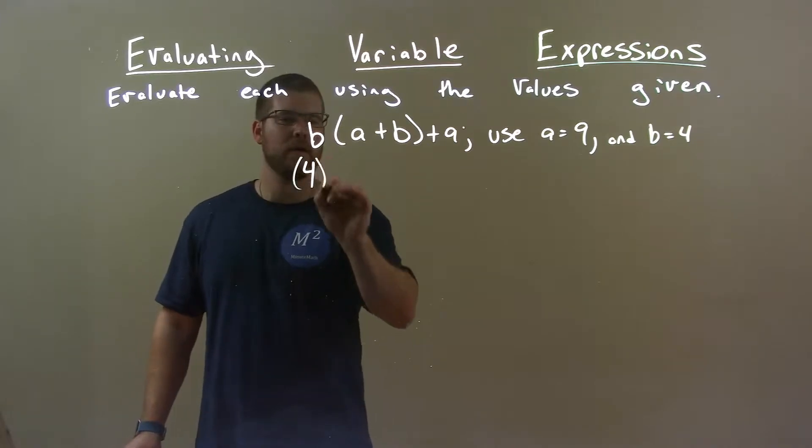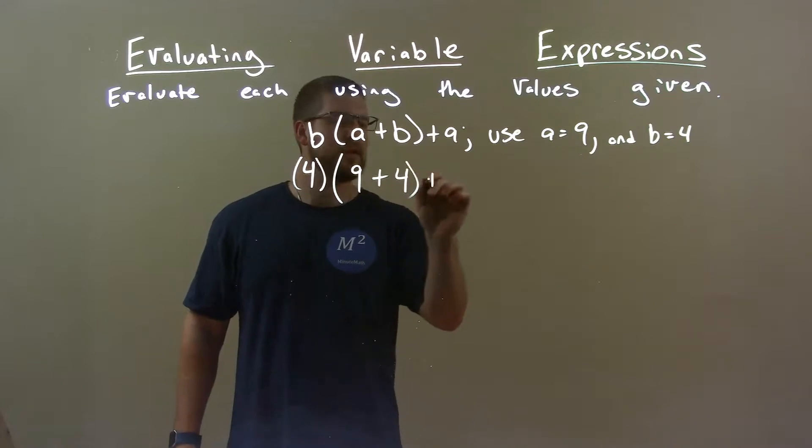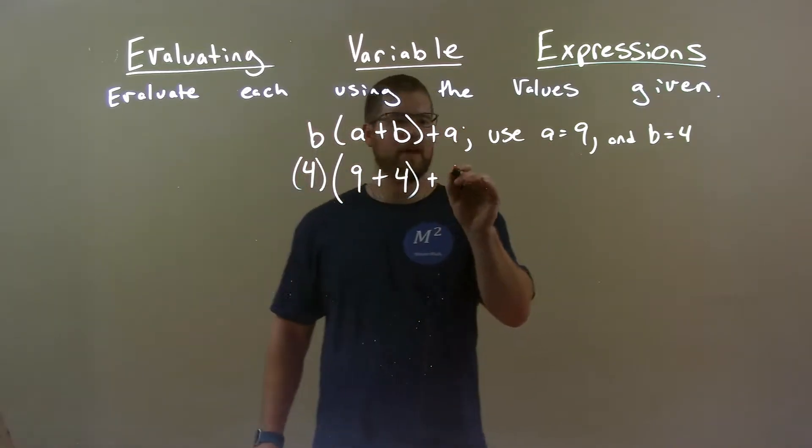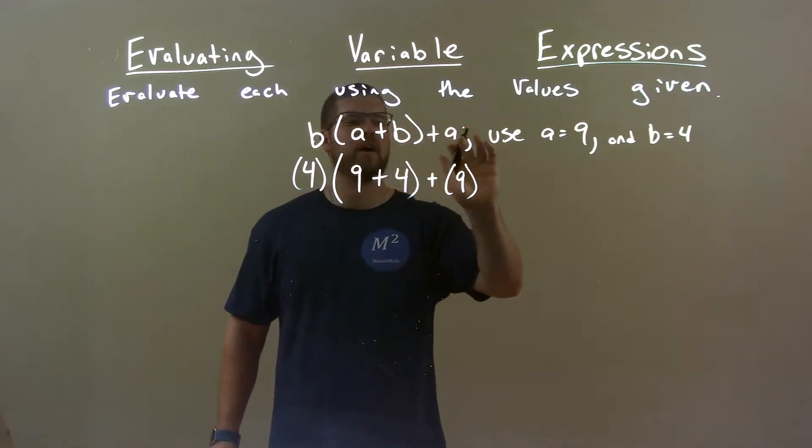So we have 4 here times A and B. A is 9 plus B is 4, plus lastly 9 at the end for A. And my A's kind of look like 9's. Alright, there we go.